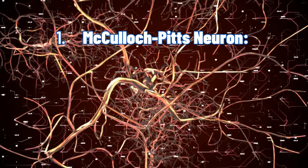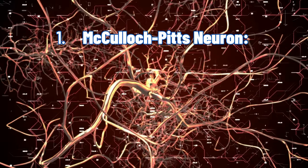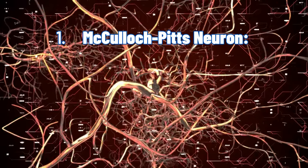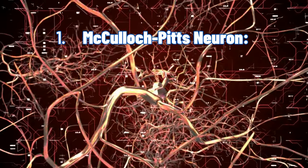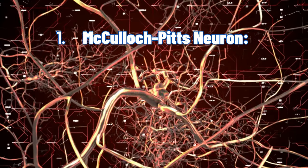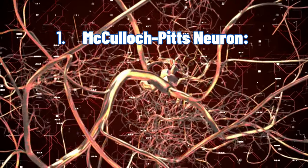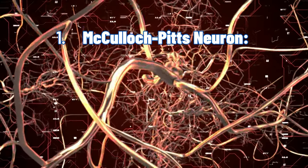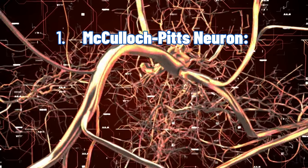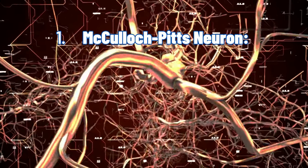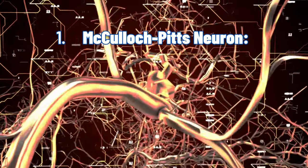1. McCulloch-Pitts neuron: In 1943, Warren McCulloch and Walter Pitts proposed the first artificial neuron, which formed the basis of neural networks. This model was inspired by the way neurons in the brain functioned, using binary outputs to process input signals.